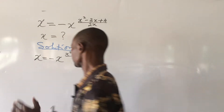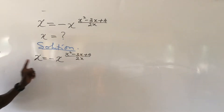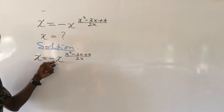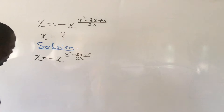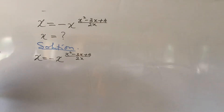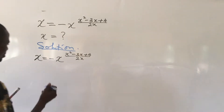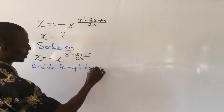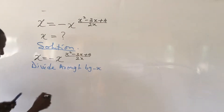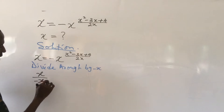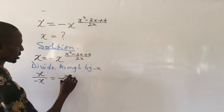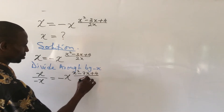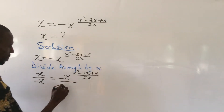Now, if you look at this question very well, I cannot take the natural log of both sides, reason being that we are having a minus sign here. So taking a natural log will not work out yet. So the first thing I will do here is to divide both sides by minus x.